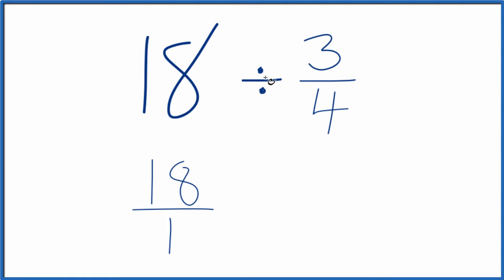Next, instead of dividing, we're going to multiply. So we're going to multiply by the reciprocal of 3 fourths.